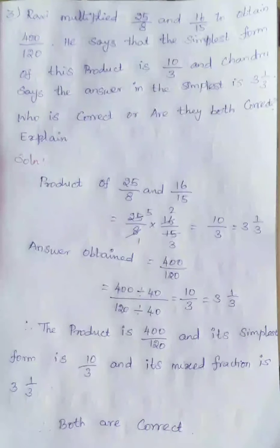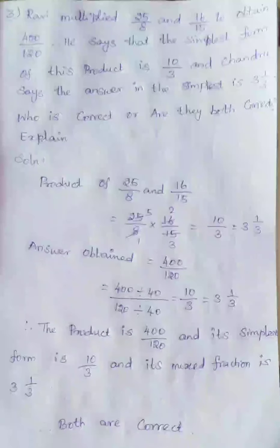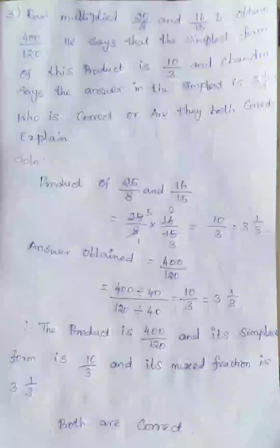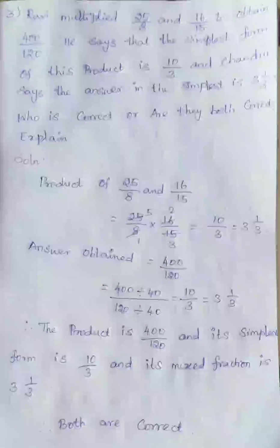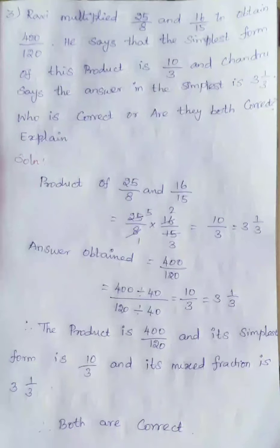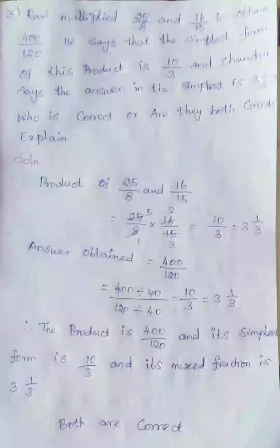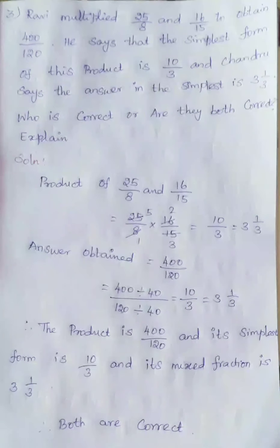Therefore, we are going to convert this improper into mixed fraction. We get 3 into 1 by 3. Here, product of 25 by 8 and 16 by 15, answer is 400 divided by 120 is given. These 400 and 120, they are having common value 40.